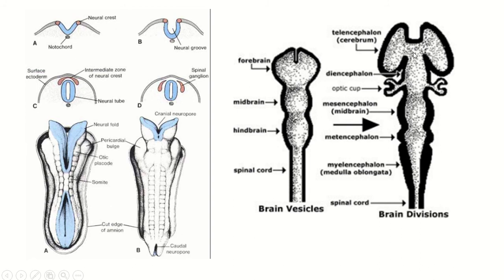The prosencephalon is divided into two parts: the telencephalon and diencephalon. The rhombencephalon is again divided into two vesicles: the metencephalon and myelencephalon. This is also the cavity of the neural tube.